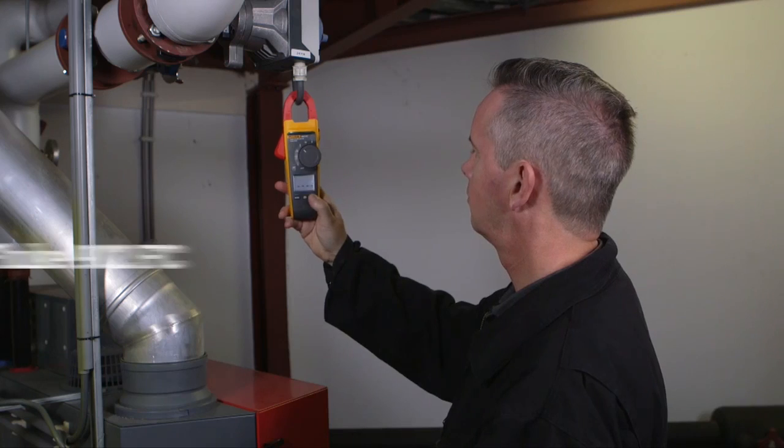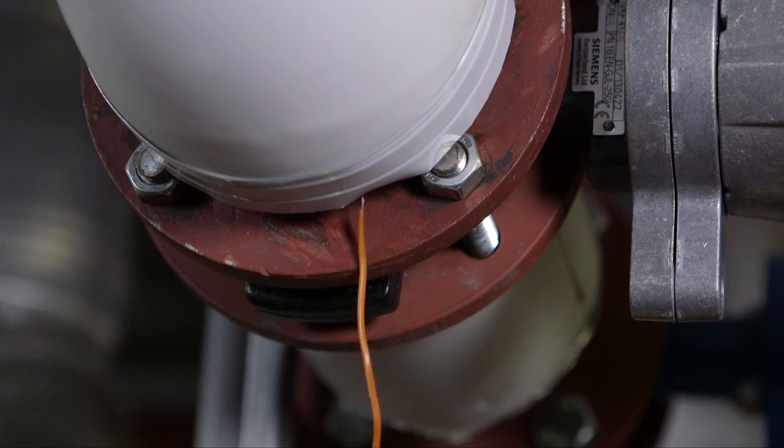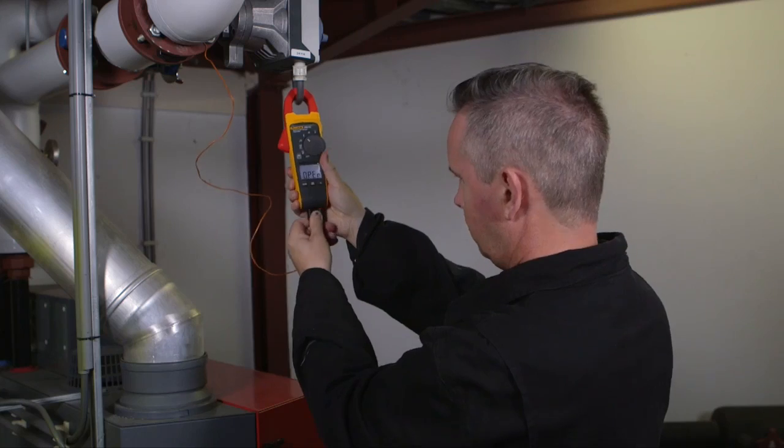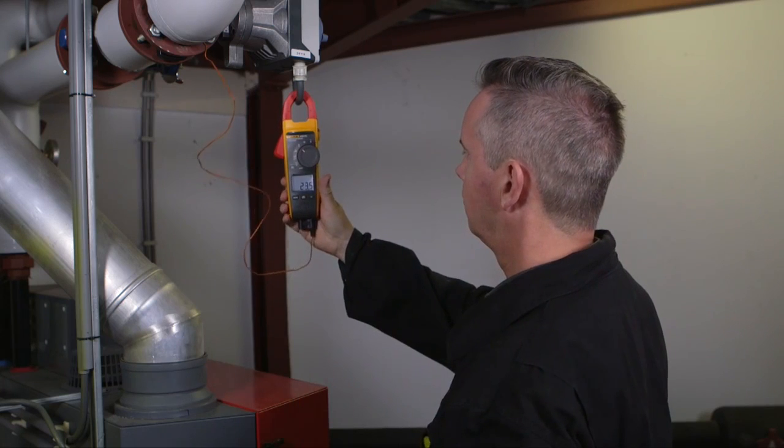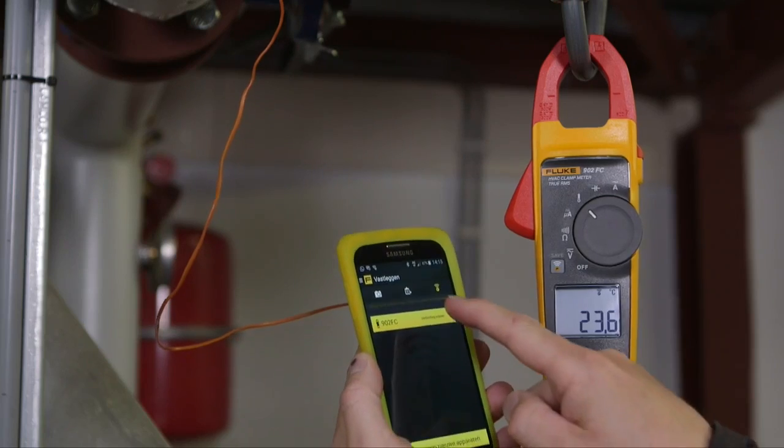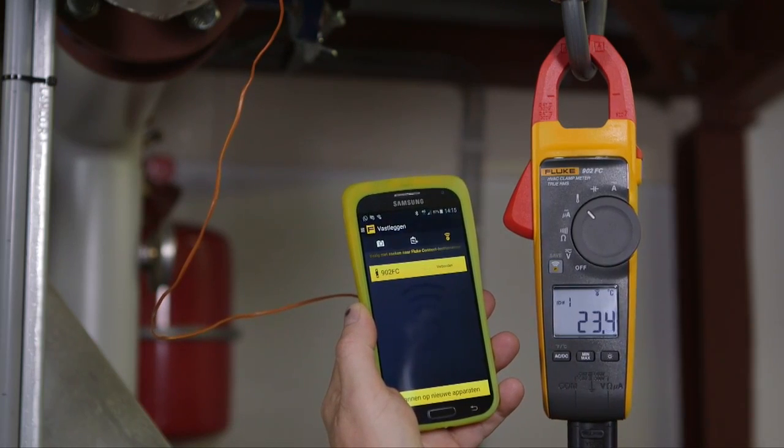The rugged dual-rated Fluke 902 FC clamp meter performs the essential measurements of HVAC systems like DC microamps, resistance, AC current, AC-DC voltage, capacitance and contact temperature, eliminating the need to carry multiple tools. Its small body is easy to hold and the jaw fits perfectly in tight workspaces.